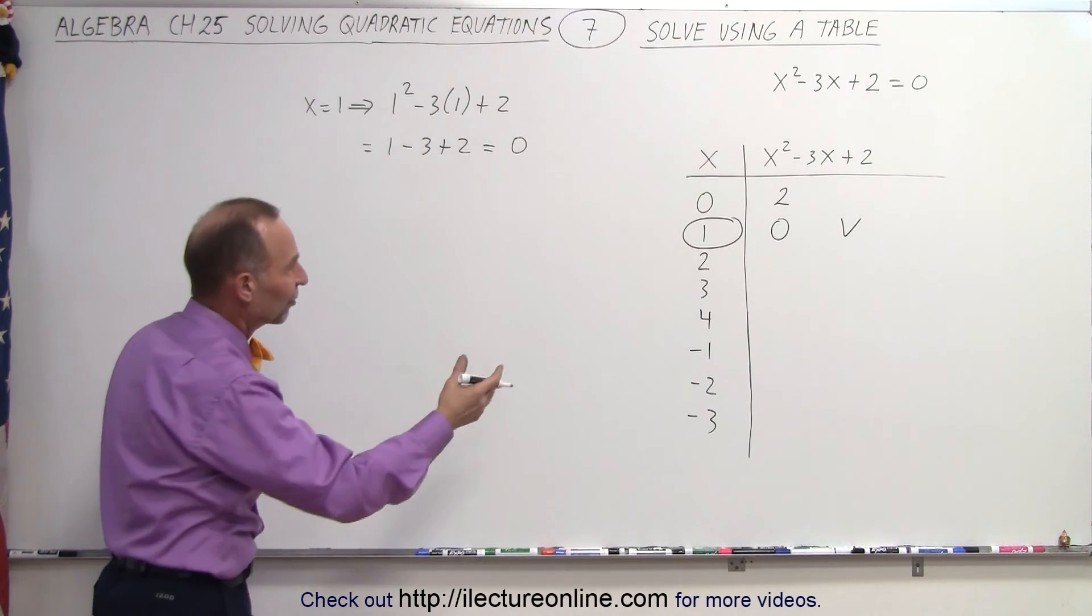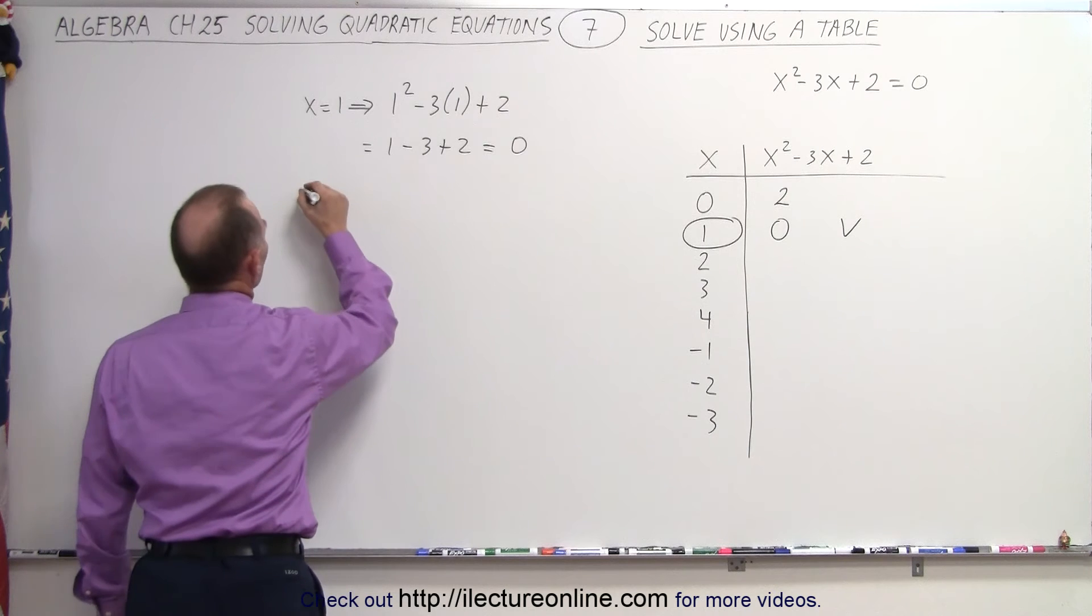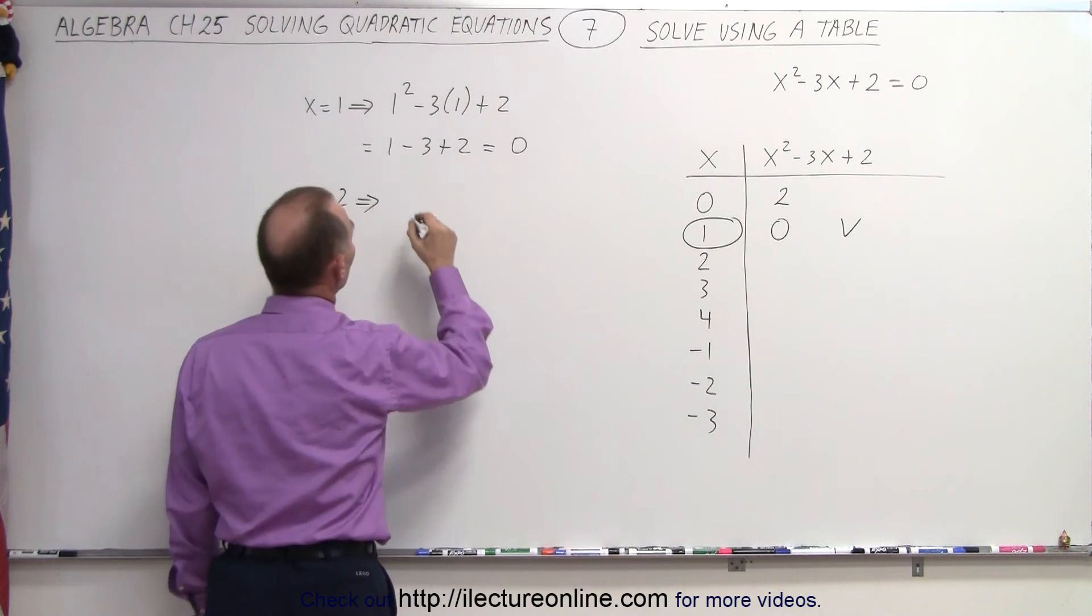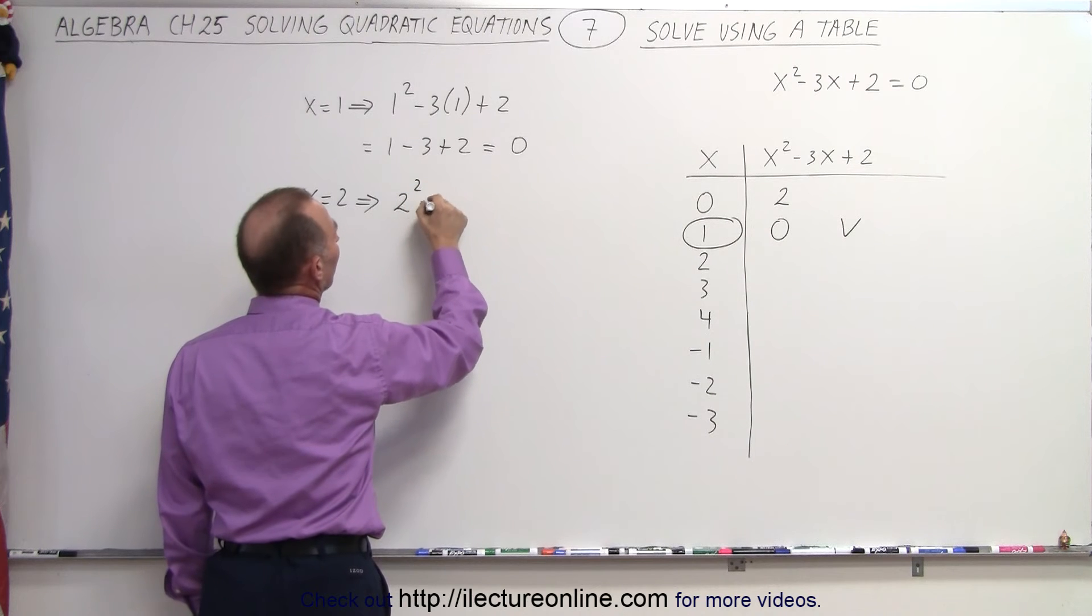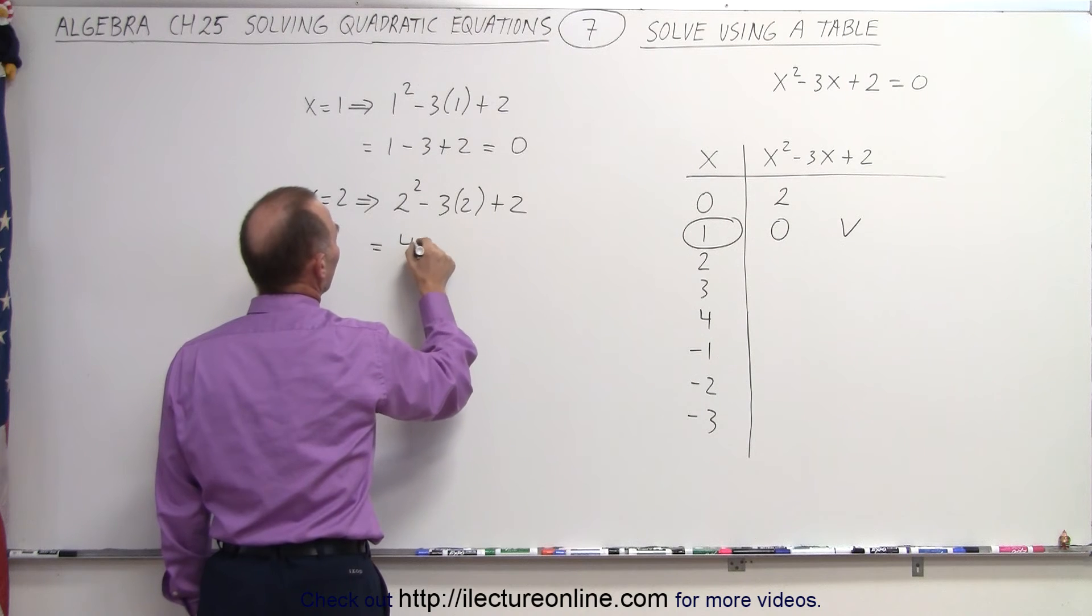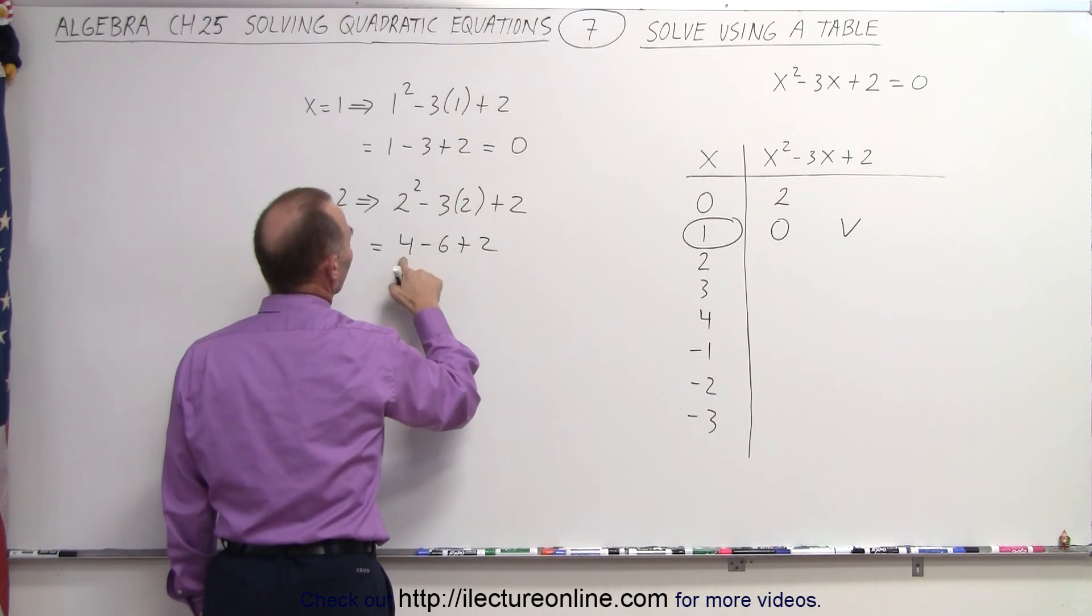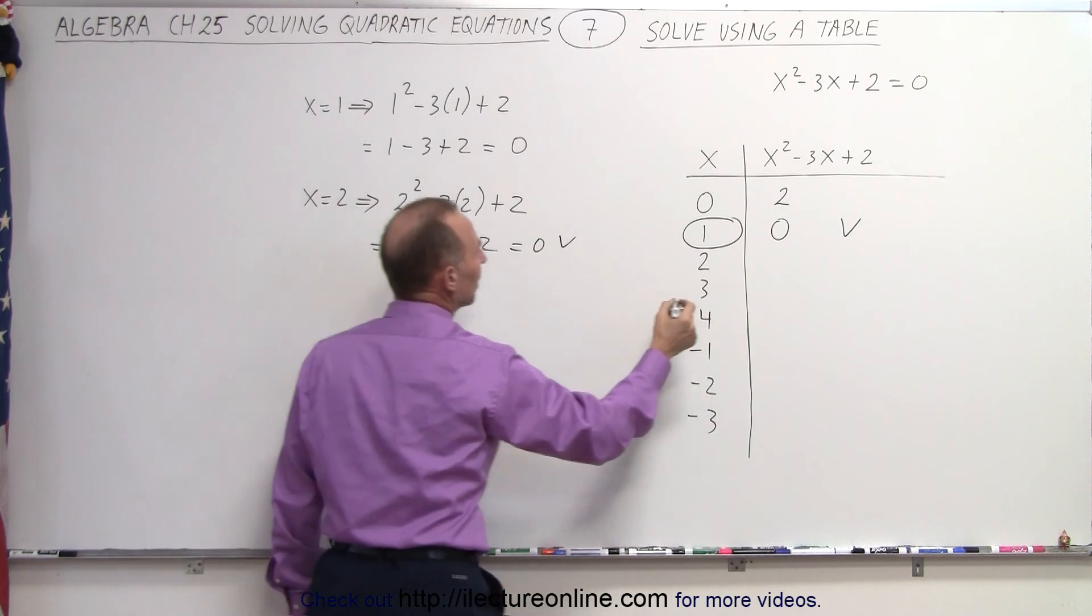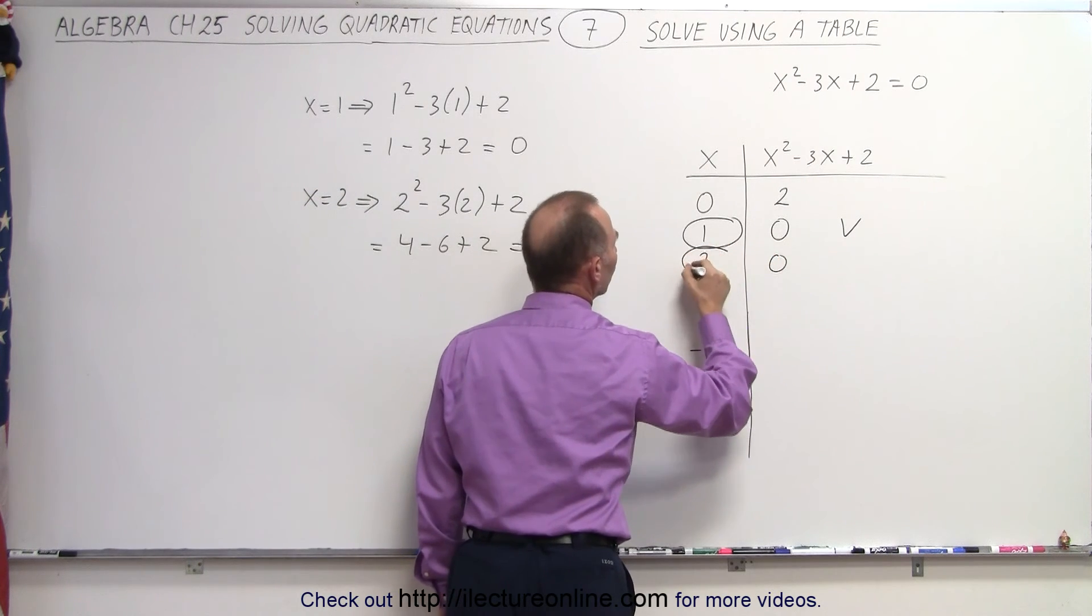You can see it's easy to work this out quickly. When x = 2, the quadratic equation gives us 2² - 3(2) + 2, which equals 4 - 6 + 2. That's 4 + 2 = 6, minus 6 = 0, so there's another solution.